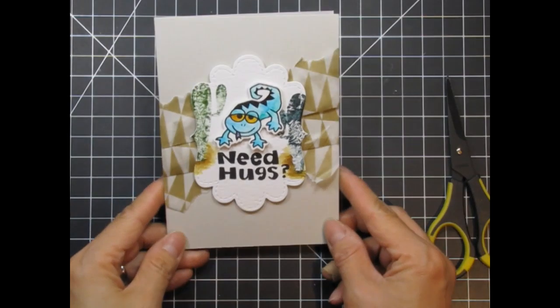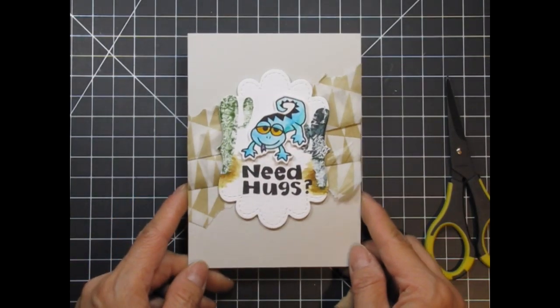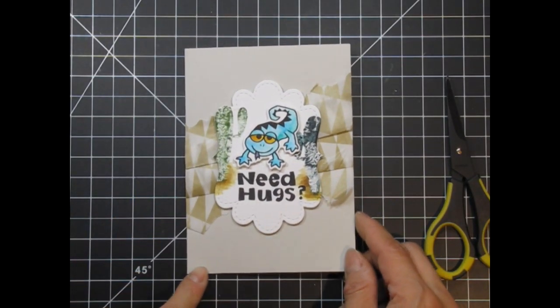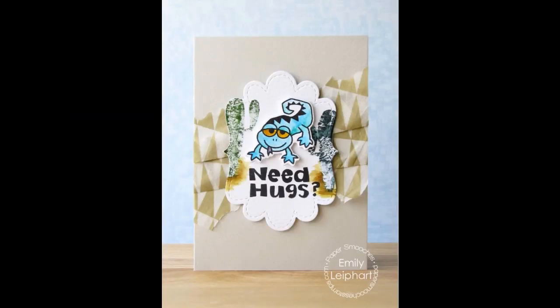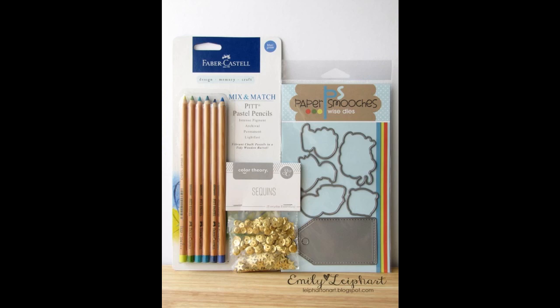Now my card is done. I did mention in the previous video post that there would be a giveaway. I'm celebrating 1,000 YouTube subscribers and, as a big thank you, I'm giving away the Posse Icons dies and Tag Stitch die along with gold sequins and pastel pencils. This package has a value of $43 and if you'd like to win it, all you have to do is leave a comment for this video on YouTube. I will announce the winner when I post my next video for paper smooches. Good luck!